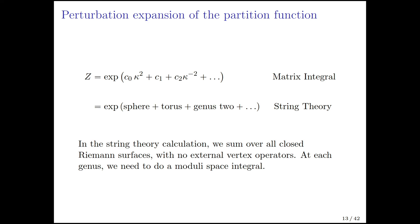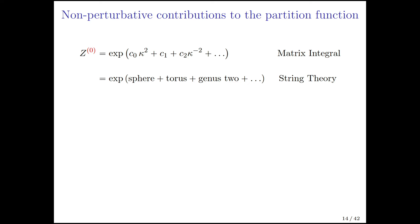What is the observable we are studying? We are studying the partition function z. In the matrix integral, it's exponential of a power series expansion in kappa to the negative 2. c0 is the sphere term, c1 is the torus, c2 is genus 2. On the string theory side, to compute these, you have to sum over all closed Riemann surfaces with no external vertex operators.